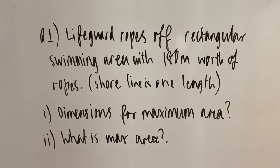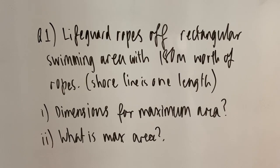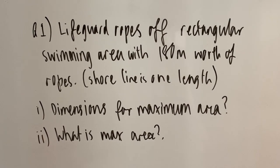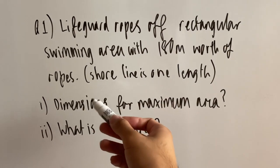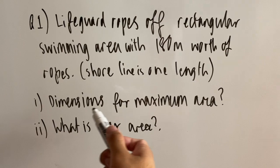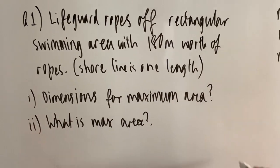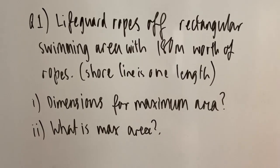Alrighty, so this question gives us a scenario. There's a lifeguard who's roping off a rectangular swimming area with 180 meters worth of rope, and remember that the shoreline is one length of this rectangular swimming area. The first part of this question asks for the dimensions so that we can get the maximum area inside of this rectangle, and the second question asks what exactly is the maximum area.